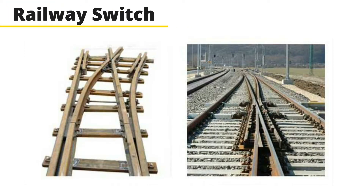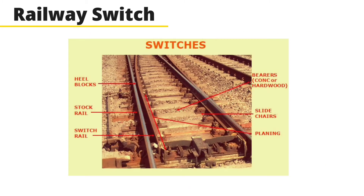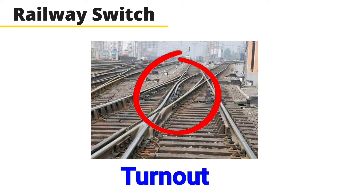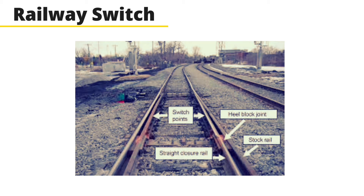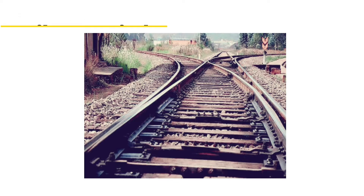The next component is the railway switch. It is a special component of the railway track which is applied at railway crossings. It has another name called turnout. A railway switch is simply a rail component for converting track direction, and it increases the trafficability of the railroad track.